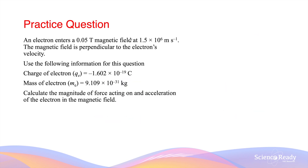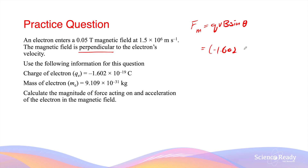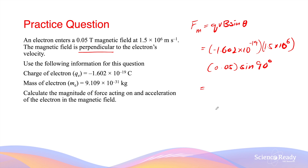An electron enters a 0.05 Tesla magnetic field at a speed of 1.5 × 10⁶ meters per second. The magnetic field is perpendicular to the electron's velocity. We have the charge and mass of the electron. To calculate the magnitude of the force acting on the electron, we use F = qvB sinθ. Q is the charge of the electron: 1.60 × 10⁻¹⁹. V is 1.5 × 10⁶ meters per second. B is 0.05 Teslas, and the angle is 90 degrees, since the velocity is perpendicular to the magnetic field. This gives a magnitude for the force of 1.2 × 10⁻¹⁴ newtons.